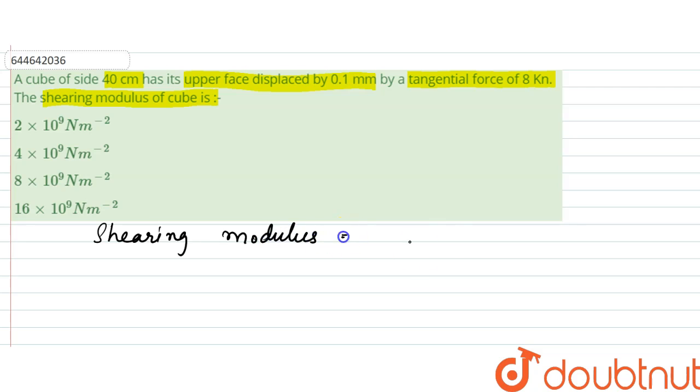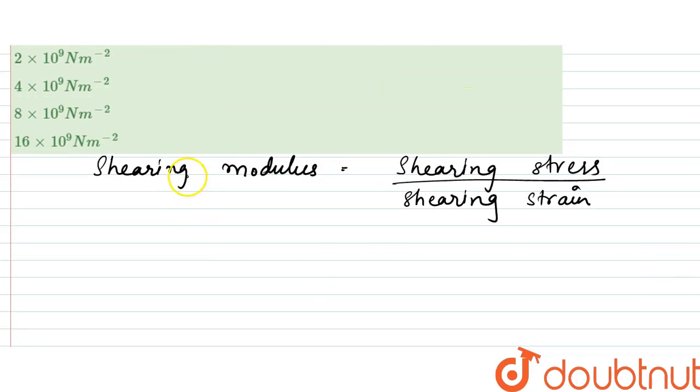The shearing modulus is equal to the shearing stress divided by the shearing strain. That is, shearing means the tangential strain. So from here, what we can say